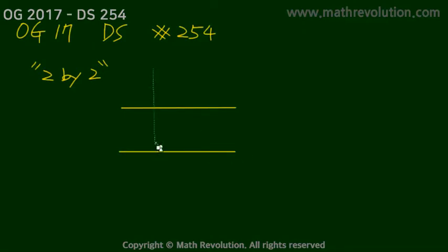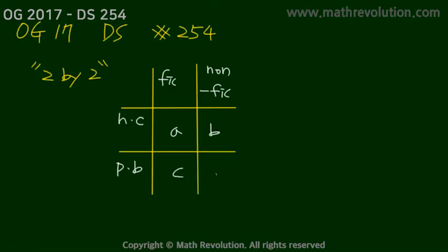We're looking at OG 17 DS number 254. This is a typical 2 by 2 problem. For 2 by 2 problems, we normally draw a 2 by 2 table. We're going to draw two lines and two more lines. This first column will be fiction, and the other one will be nonfiction. I'll put hardcover in the first row and paperback in the second row. Each area here will be A, B, C, and D.